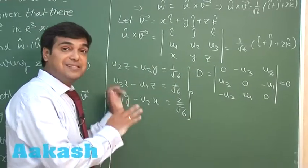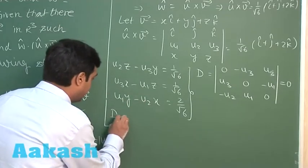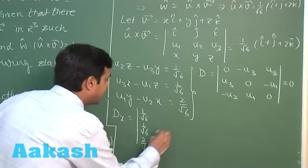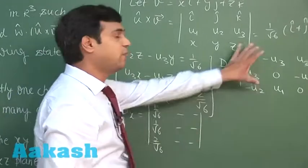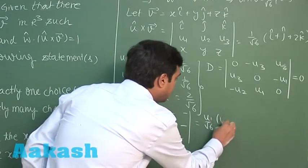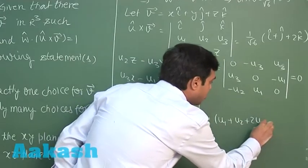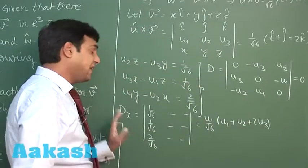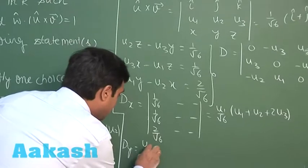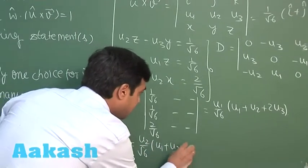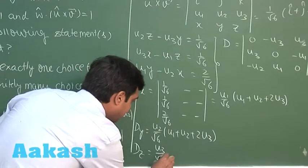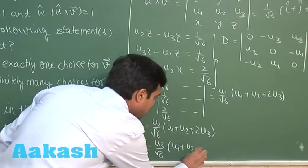Similarly, we can find Dx, Dy, Dz. Dx comes out to u1/√6 multiplied by (u1 + u2 + 2u3). Similarly, Dy equals u2/√6 multiplied by (u1 + u2 + 2u3), and Dz equals u3/√6 multiplied by (u1 + u2 + 2u3).